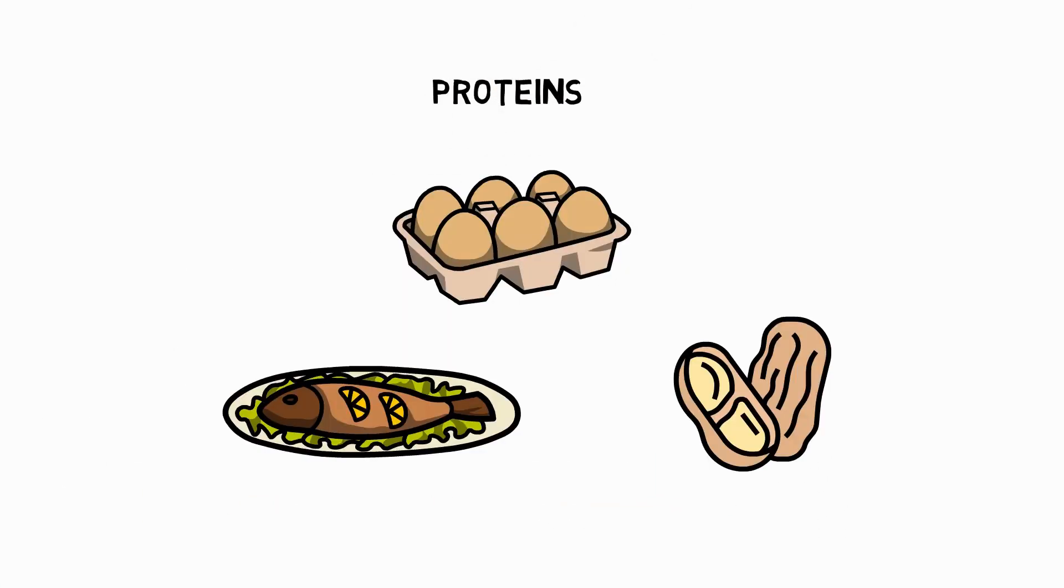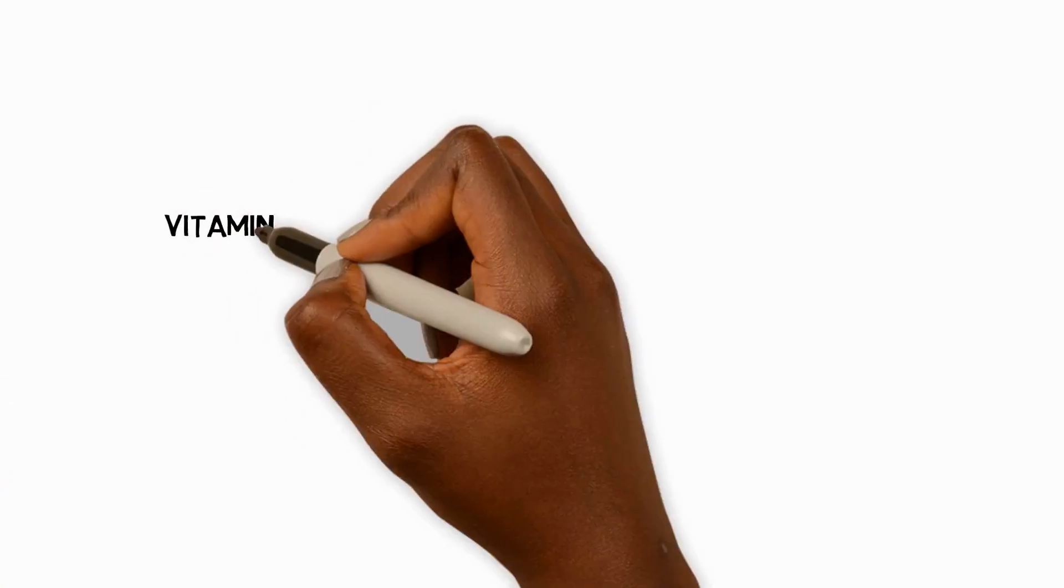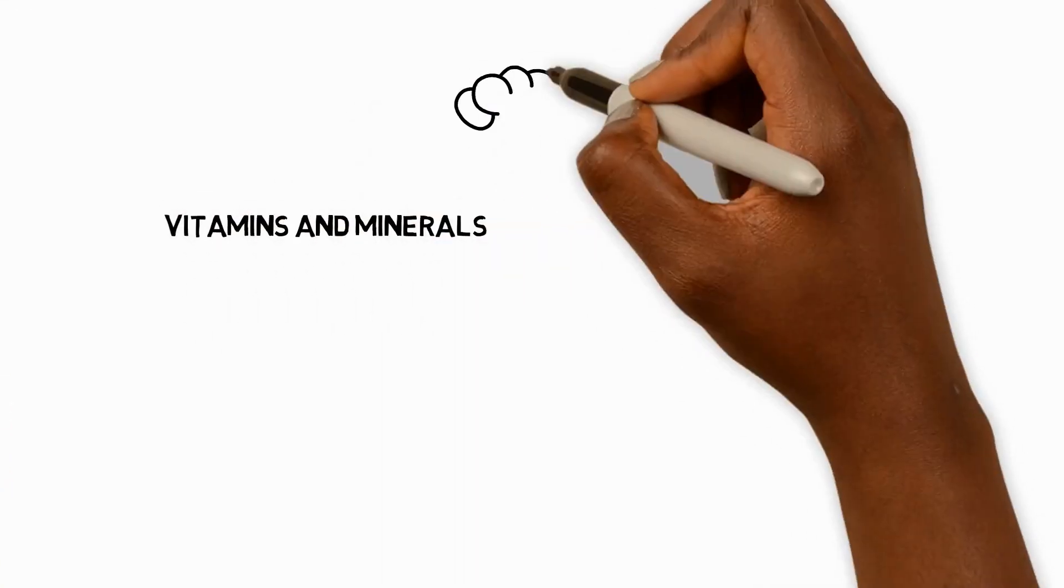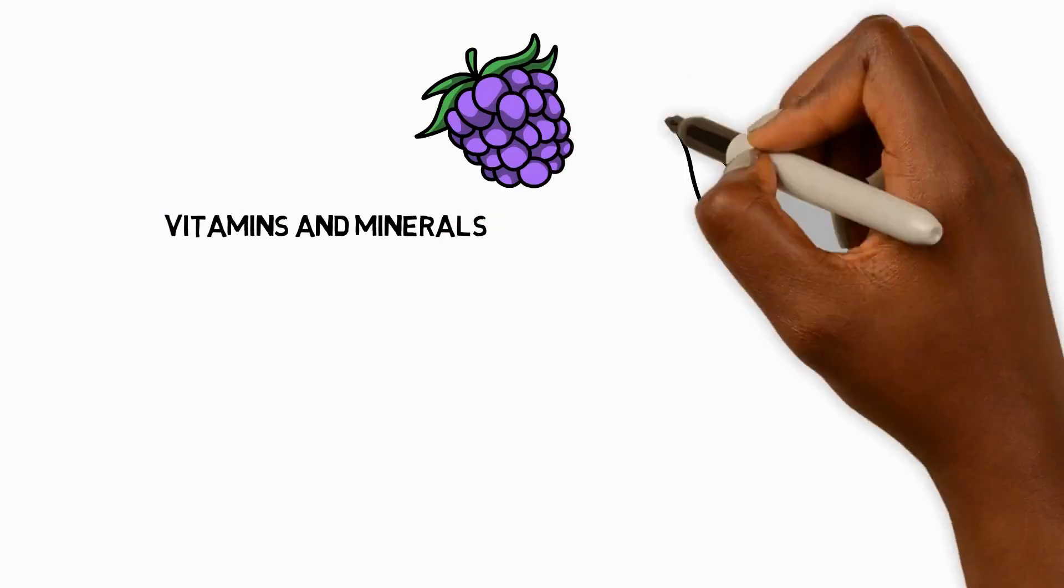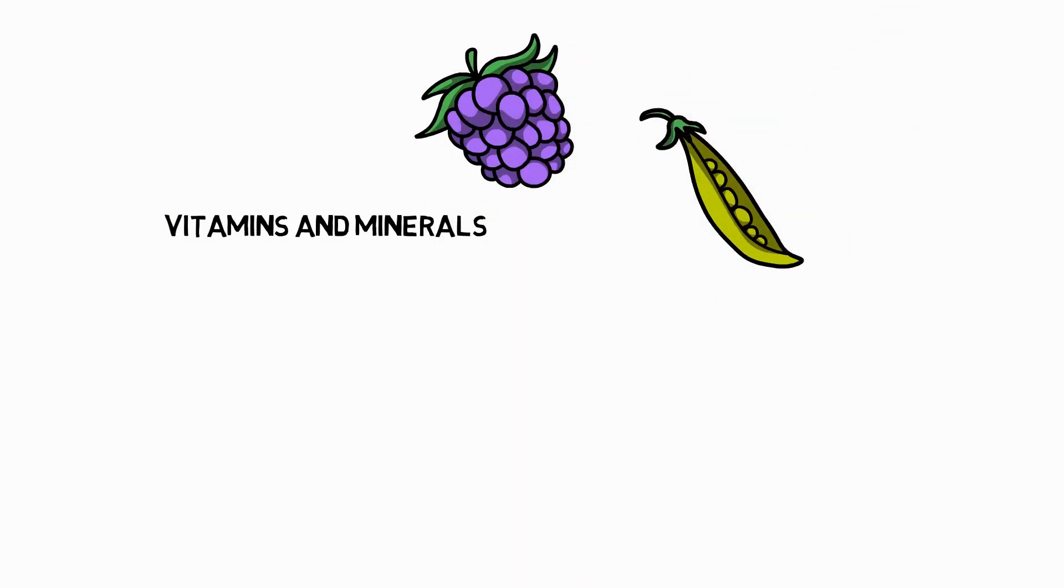Proteins like fish, eggs, and nuts are vital for building and repairing our body's muscles, skin, hair, and nails. Vitamins and minerals are also important for keeping us healthy. We can find them in fruits and vegetables. They help us use the other nutrients and prevent illness.